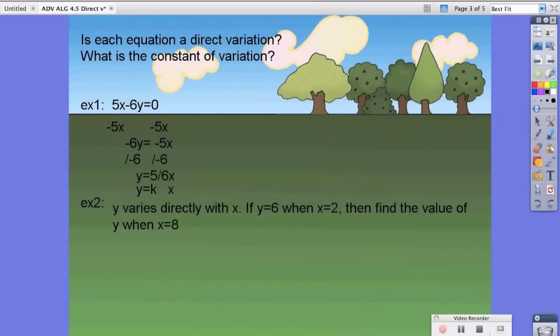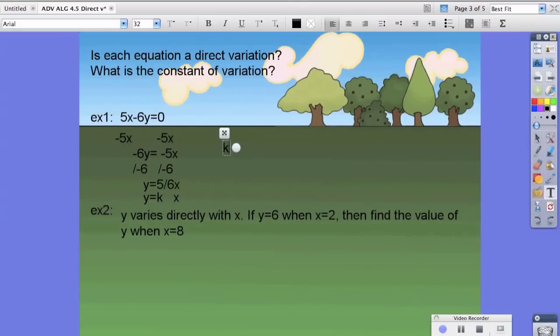Now because we can set it as y equals kx, it is a direct variation. Now the second part of the question is what is the constant of variation? Well, they're essentially asking what is k equal to? Now playing match, you should be able to determine that k or your constant variation is 5 sixths or 5 divided by 6. So as x increases, your y is going to increase also by a factor of 5 sixths.